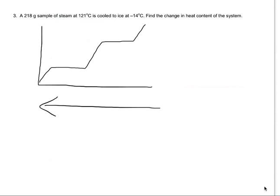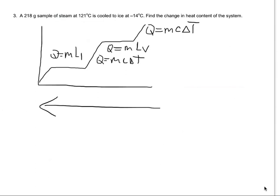Those are the five components of this problem. Remembering the different equations we use at each point: for the gas cooling it's q = mcΔT where c is the specific heat of steam; for condensation it's q = m times the latent heat of vaporization; for the liquid cooling it's q = mcΔT again; for freezing it's q = m times the latent heat of fusion; and the last part is q = mcΔT where c is the specific heat of ice.